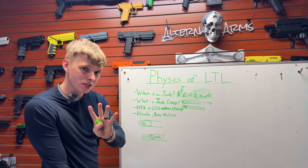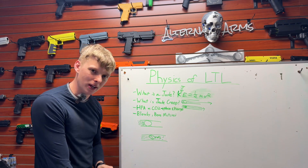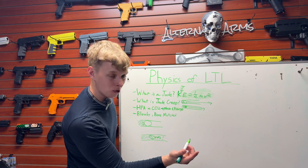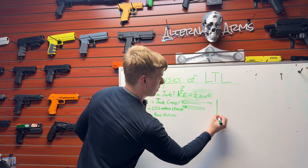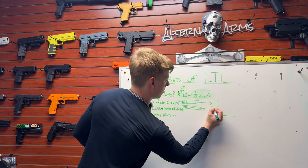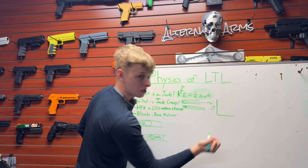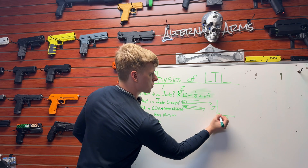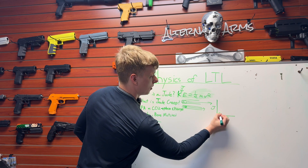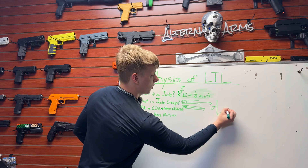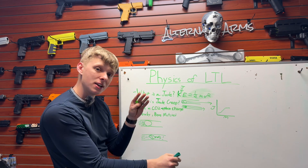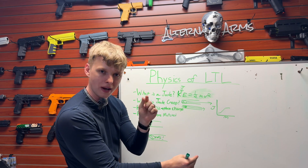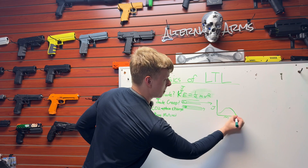And before you say it — I know what you're going to say. Luke, isn't there a limit to how heavy a round can be? The answer is yes. Just to show you in a graph: if we were to plot joules — the power output — against the mass of the projectile, you're going to notice that with extremely light rounds you get low power, followed by an increase in power as the round gets heavier. You get what is called your point of diminishing returns, where you need an exponentially heavier round in order to get a marginal amount of power increase, followed by a decrease in power.